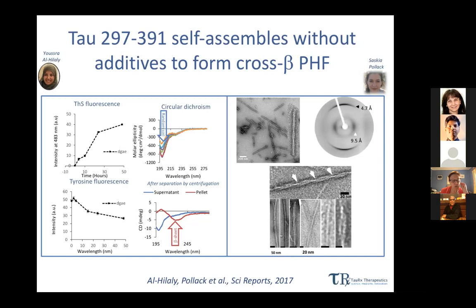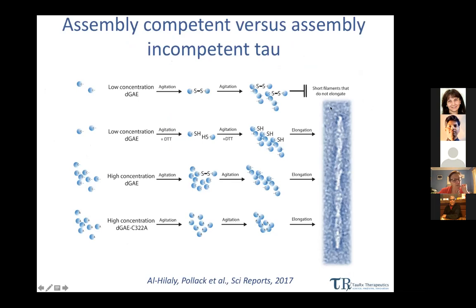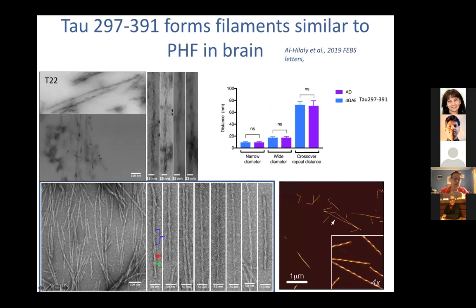I've taken out a couple of slides because what we were able to show was that these fibrils or filaments form much more easily under reducing conditions. We did a number of studies looking at the addition of a reducing agent and the formation of paired helical filaments, which can be seen in the published paper. We then wanted to do a study to see if 297–391 DJE forms filaments actually similar to PHF in brain.